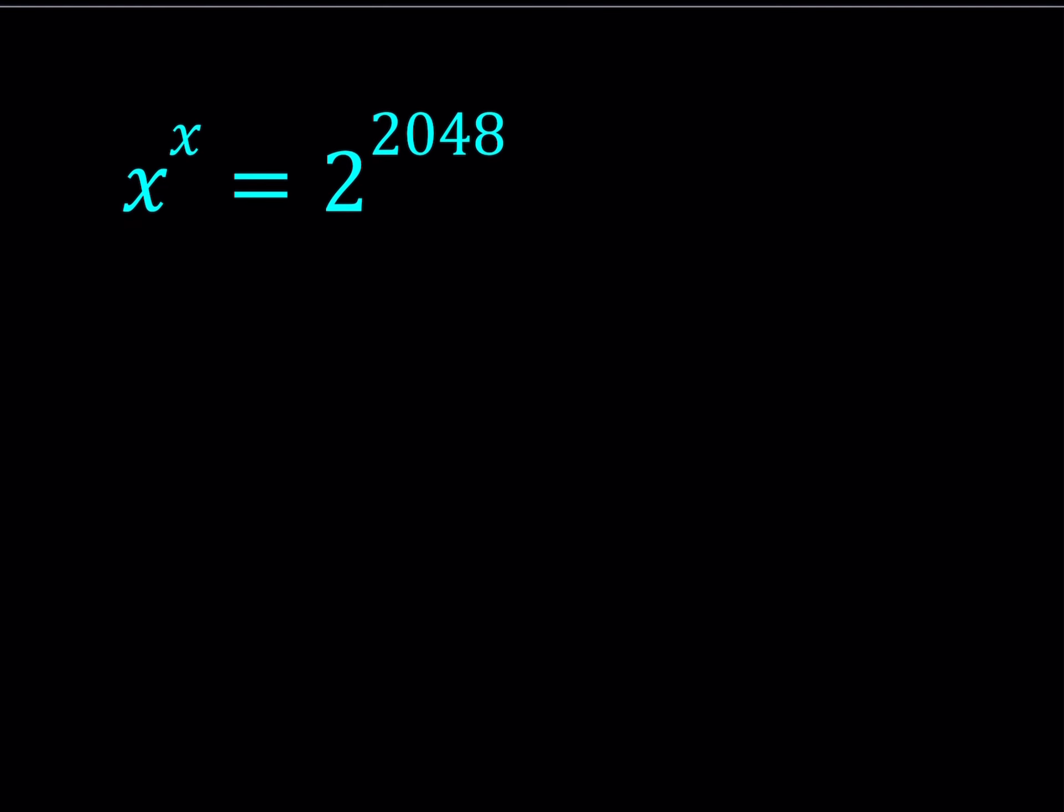Today we're going to be solving an exponential equation. This is a homemade problem and you can easily make one of these by working backwards. We have x to the power x equals 2 to the power 2048. That's a really large number, and you can easily find how many digits it has using logs. We're going to be solving for x without using a calculator. I'll be presenting two methods. Let's start with the first method.